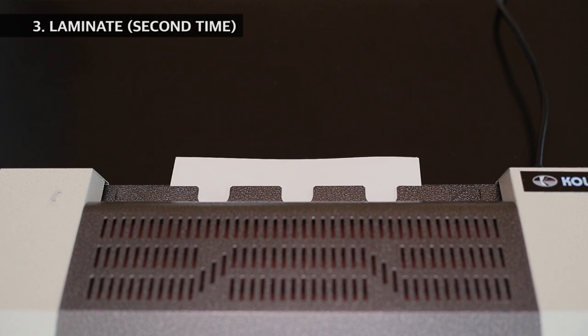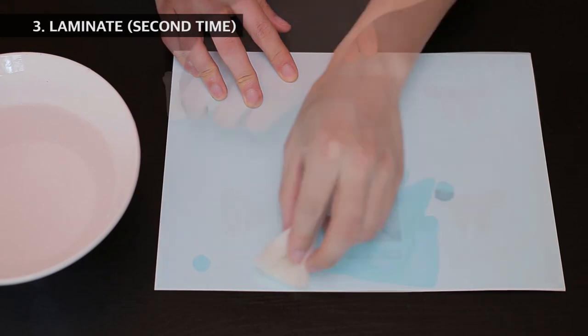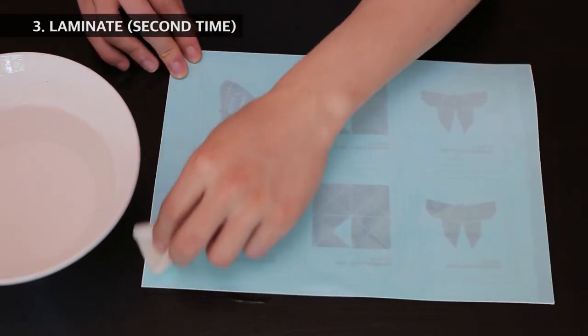Feed it through the machine in the same fashion. Then use a wet cloth or a tissue to soak the blue decal and remove it.